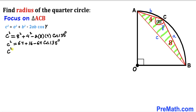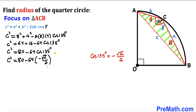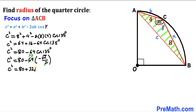Combining like terms gives c² = 80 − 64·cos(135°). Since cos(135°) = −√2/2, this becomes c² = 80 − 64·(−√2/2). Since 64 divided by 2 is 32, and negative times negative is positive, we get c² = 80 + 32√2. Let's call this equation 1.